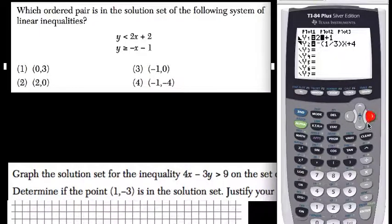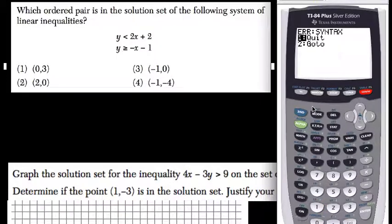We have 2x plus 2, and y is less than it, so it's the region below the line. The next one is negative x minus 1. The graphing calculator will graph both for us.